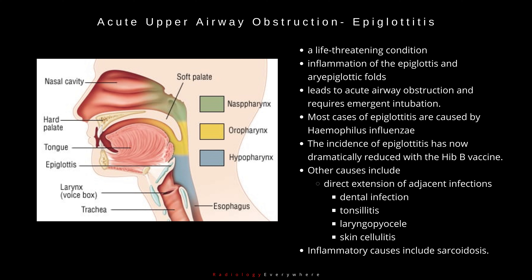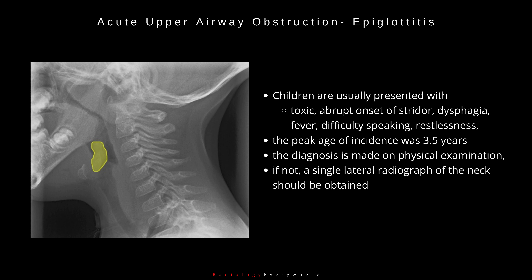Other causes include direct extension of adjacent infections like dental infection, tonsillitis, laryngopyocele, and skin cellulitis. Inflammatory causes include sarcoidosis. The incidence of epiglottitis has now dramatically reduced with the HiB vaccine. Children are usually presented with toxic, abrupt onset of stridor, dysphagia, fever, difficulty speaking, muffling or changes in the voice, restlessness, and an increase in respiratory distress when recumbent. The peak age of incidence was 3.5 years.